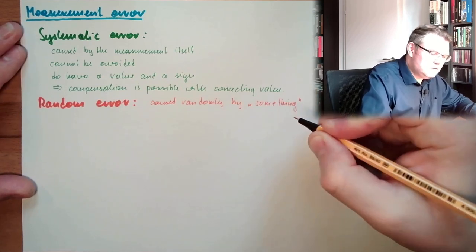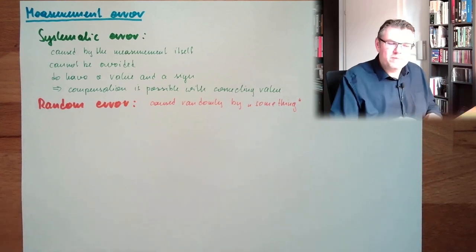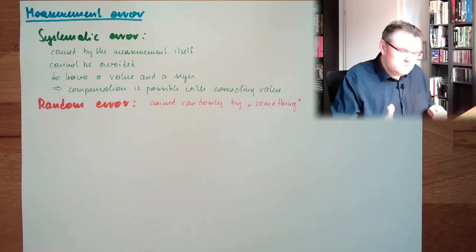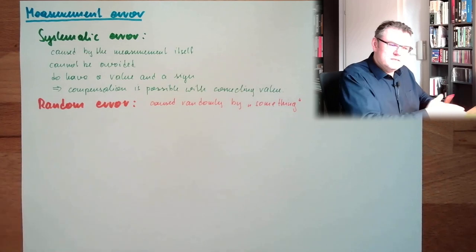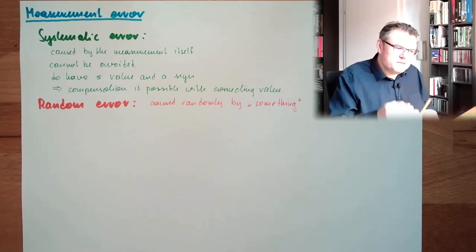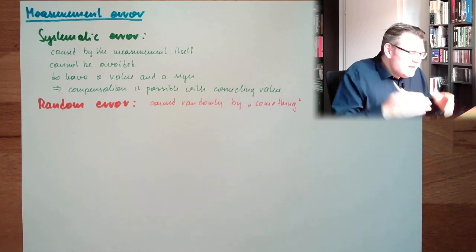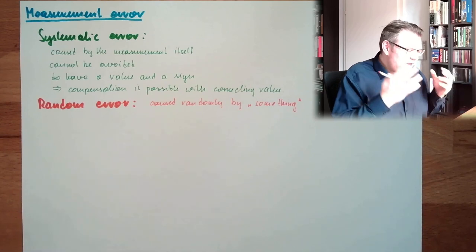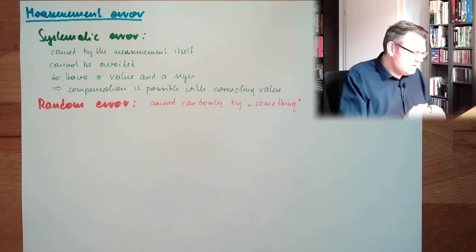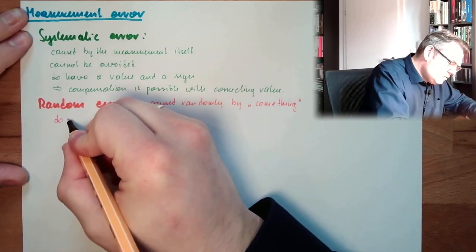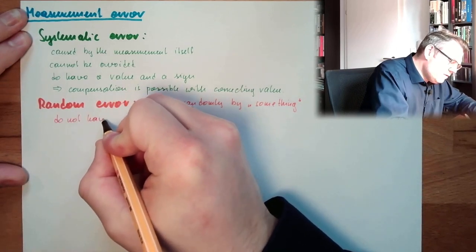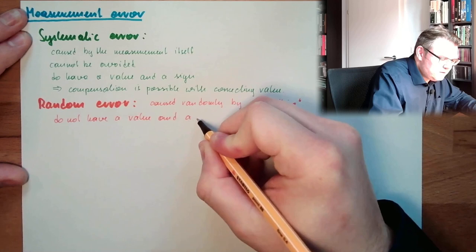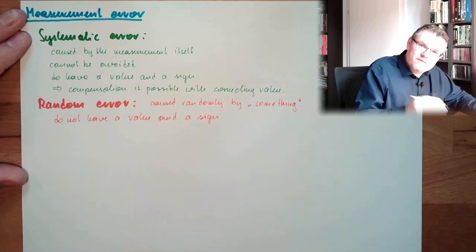Random errors have a cause, but this cause cannot be determined. You cannot say this and that is the cause — it's just bad luck. Sometimes there's a little bit of friction, sometimes there's a dust particle somewhere, sometimes not. They are caused randomly by something. They do not have a fixed value and they do not have a fixed sign.